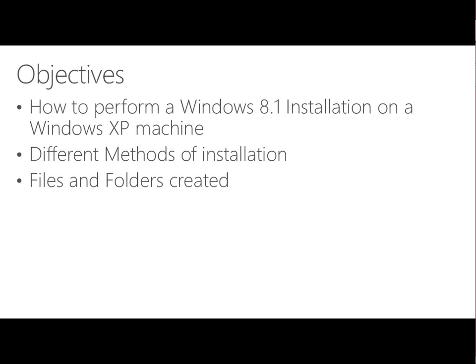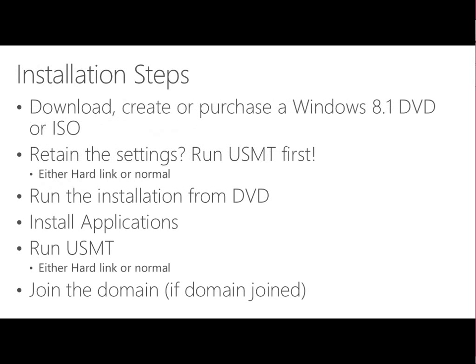If you're doing a migration that's not part of a larger scale migration - say the CEO comes in and bought a Windows 8.1 DVD from the local computer shop and wants to do an installation on their XP box - the installation steps are pretty basic. You need to download, create, or purchase the Windows 8.1 DVD or ISO. You can get media through Software Assurance, MSDN, or download eval software from TechNet to see how your upgrade process will work.